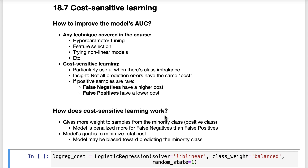So how does cost-sensitive learning actually work? In scikit-learn, this is implemented using the class_weight parameter for some models, such as logistic regression and random forests. By setting class_weight to balanced, scikit-learn will give more weight to the samples from the minority class than samples from the majority class. More specifically, the model is penalized more for making mistakes on the minority class — meaning false negatives — than it is for making mistakes on the majority class, meaning false positives.